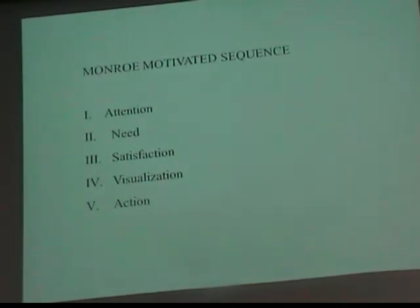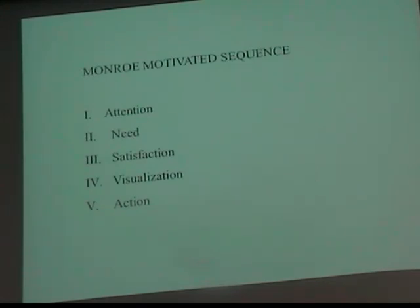Lastly, Monroe's Motivated Sequence has five points, covered probably in chapter seven: attention, need, satisfaction, visualization, and action. It's a great outline for speech five, your persuasive speech. The attention step is your introduction — get their attention. Then show the need for whatever you're trying to persuade them to do. Then satisfy that need. Visualization — show them how it affects them. And the action step is to explicitly tell them what you want them to do: to buy, to think, to feel — whatever you're trying to persuade them to do.